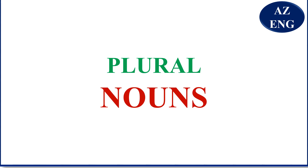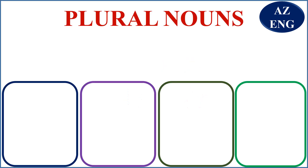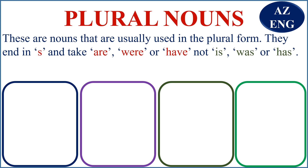Hi and welcome back. Today's topic is plural nouns. These are nouns that are usually used in the plural form. They end in S and take 'were' or 'have', not 'is', 'was', or 'has'. Let's have examples so that it becomes clearer. Oddments — you see, oddments ends in S.